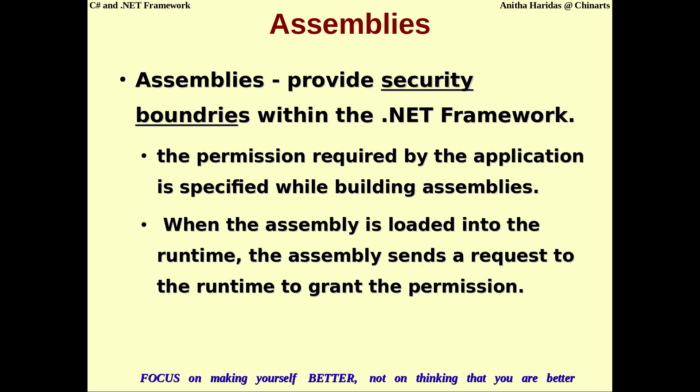The assembly also provides security boundaries within the .NET framework. The permissions required by the application are specified while building the assemblies. When the assembly is loaded into the runtime, it sends the request to the CLR to grant the permission, and the CLR will grant the permission according to the security specifications given inside the assembly.